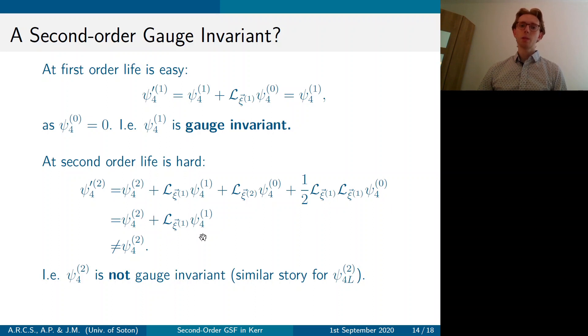It's a similar story for psi 4 L2. And we're going to use this fact that it's only dependent on zeta 1 in order to implement a gauge fixing technique. So that means we're going to write zeta 1 in terms of the first order metric perturbation such that zeta 1 takes you to a fully fixed gauge from any gauge which H1 is in.